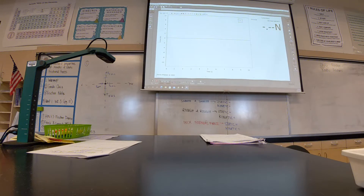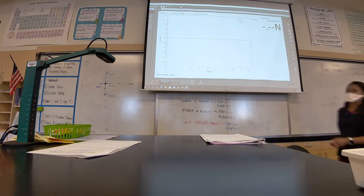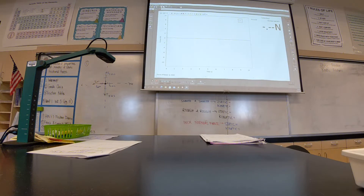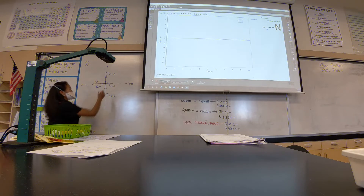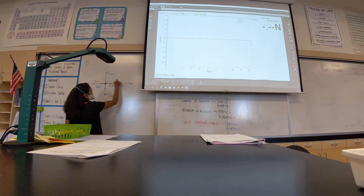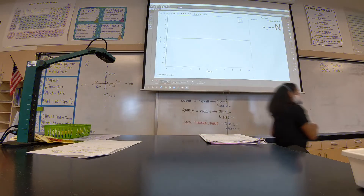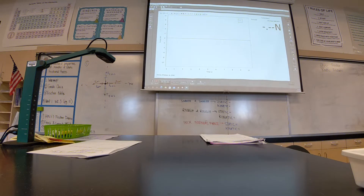Let's say my shoe was heavier and I started pulling with a harder force — even harder than initially — and it's still not moving. My free body diagram: the applied force increases, so now my applied force is bigger. It doesn't move, so what does my frictional force have to do? Match it. As my applied force increases, my frictional force will match it — they're equal again. That happens up until the point that my applied force is strong enough to start dragging the shoe.